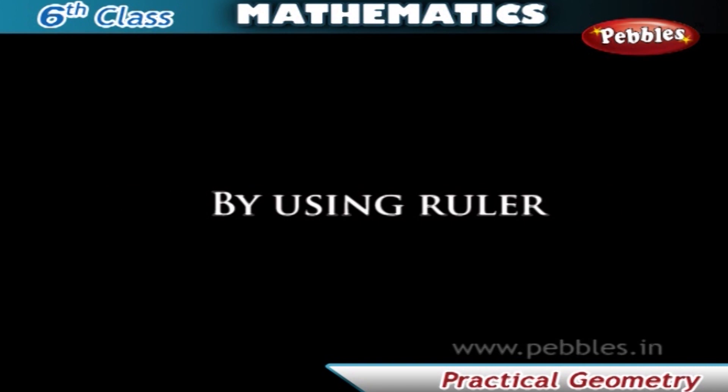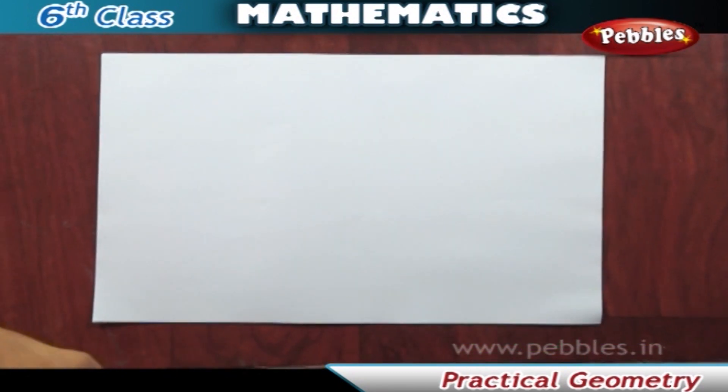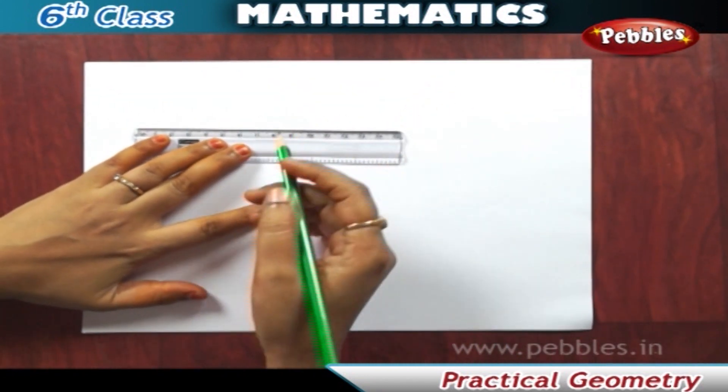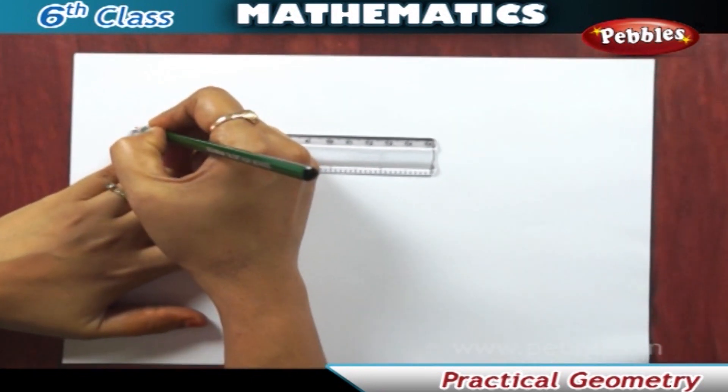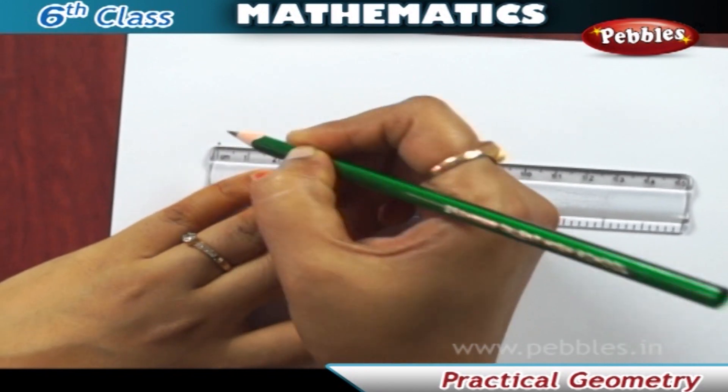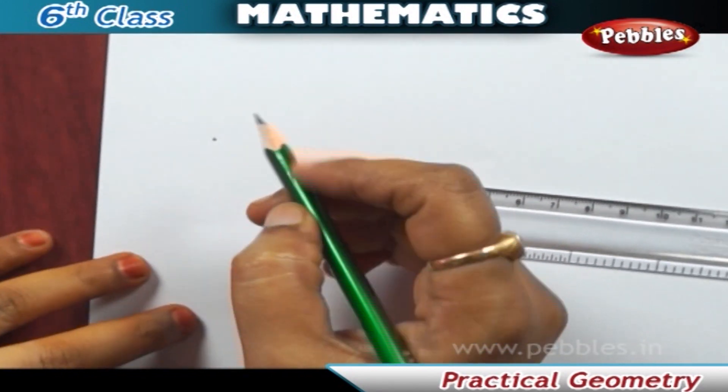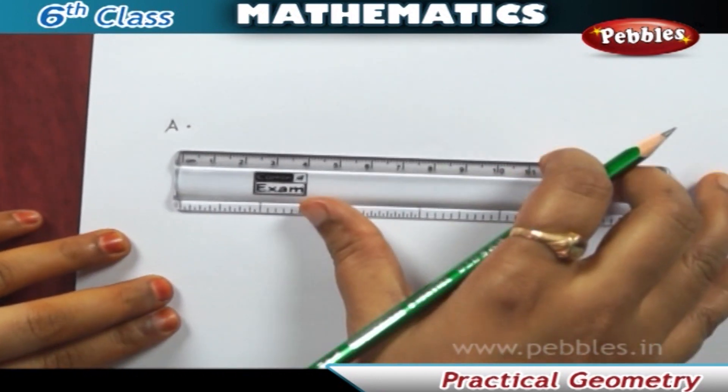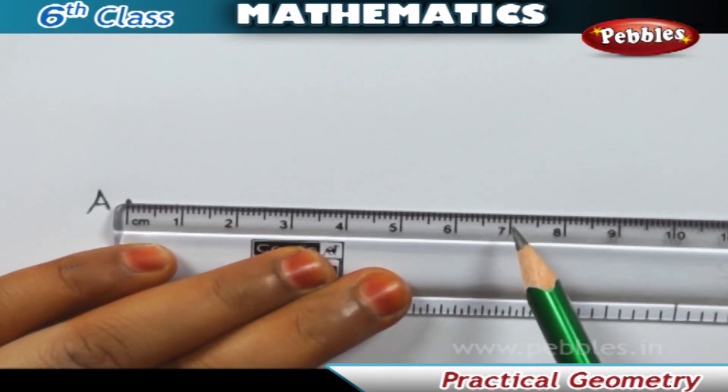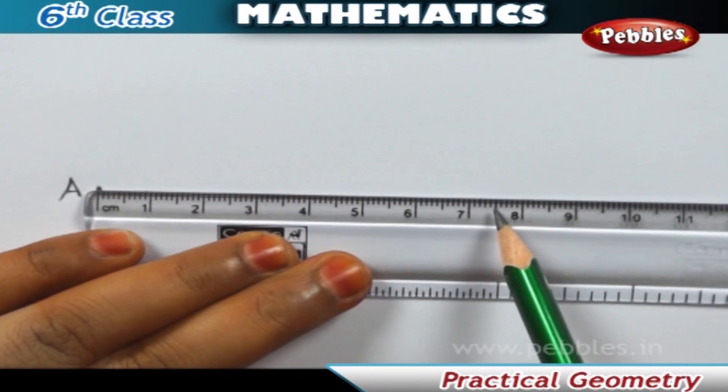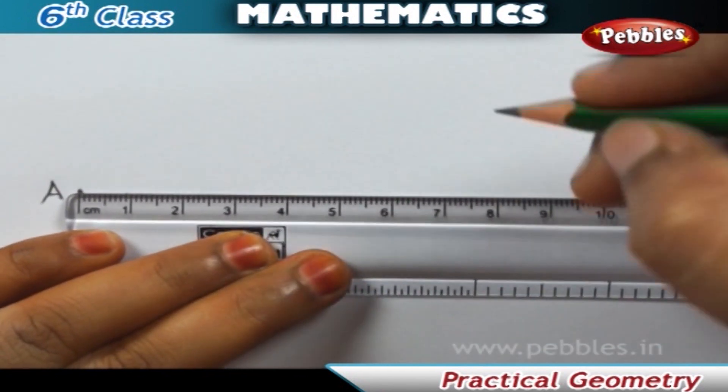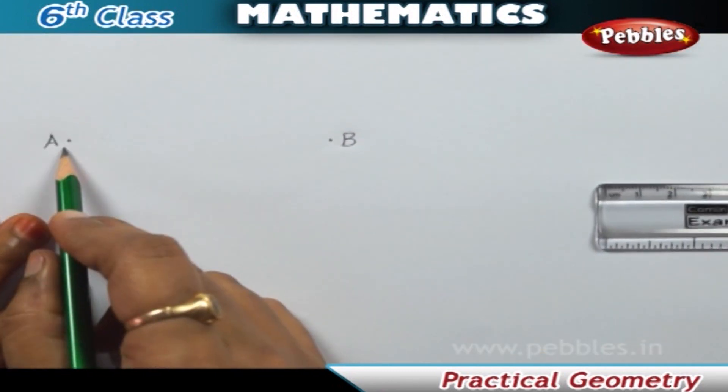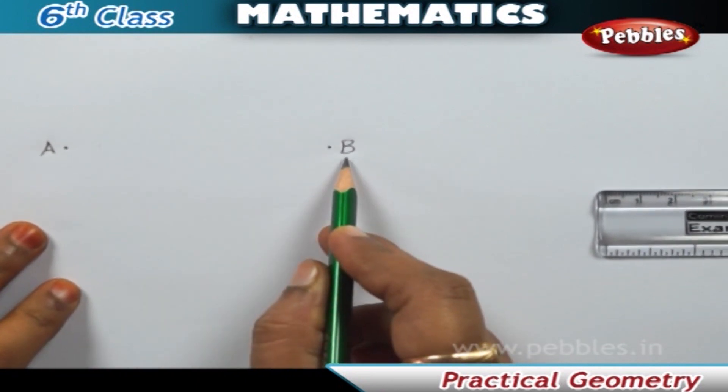First one, by using ruler. Suppose we want to draw a line segment of 7.8 centimeters length. First, place the ruler on a paper and hold it firmly. Mark a point with a sharp edged pencil against zero centimeter mark of the ruler. Name the point as A. Mark another point against eight small divisions just after the seven centimeter mark. Name this point as B. Join points A and B along the edge of the ruler. AB is the required line segment of length 7.8 centimeters.